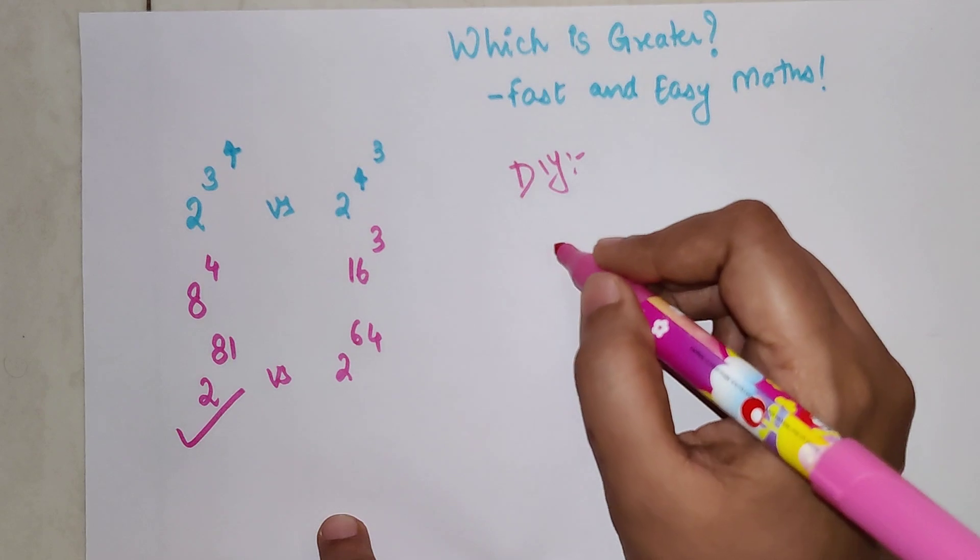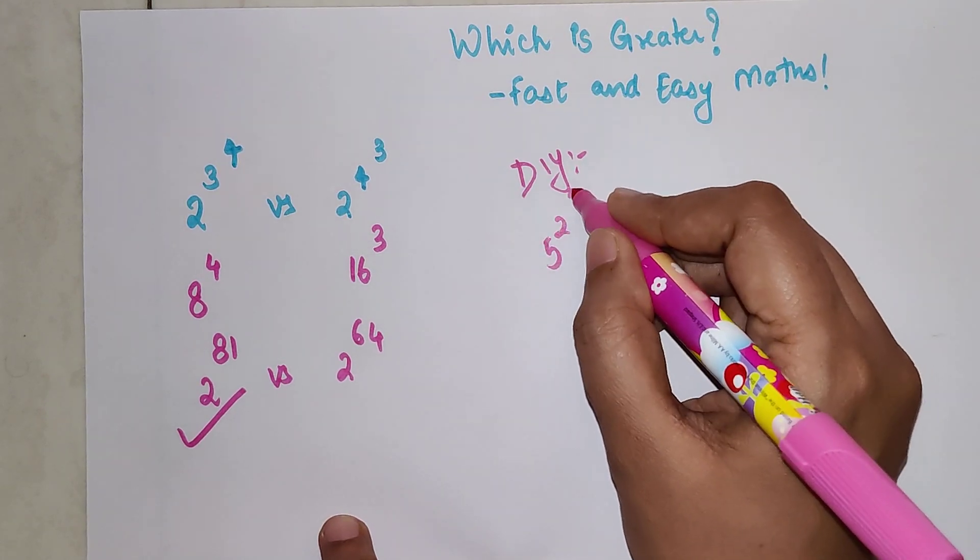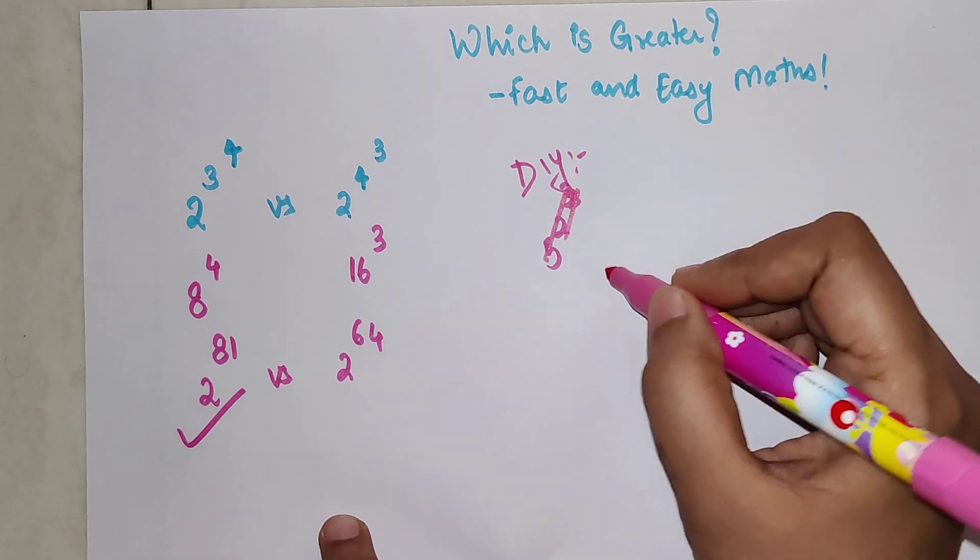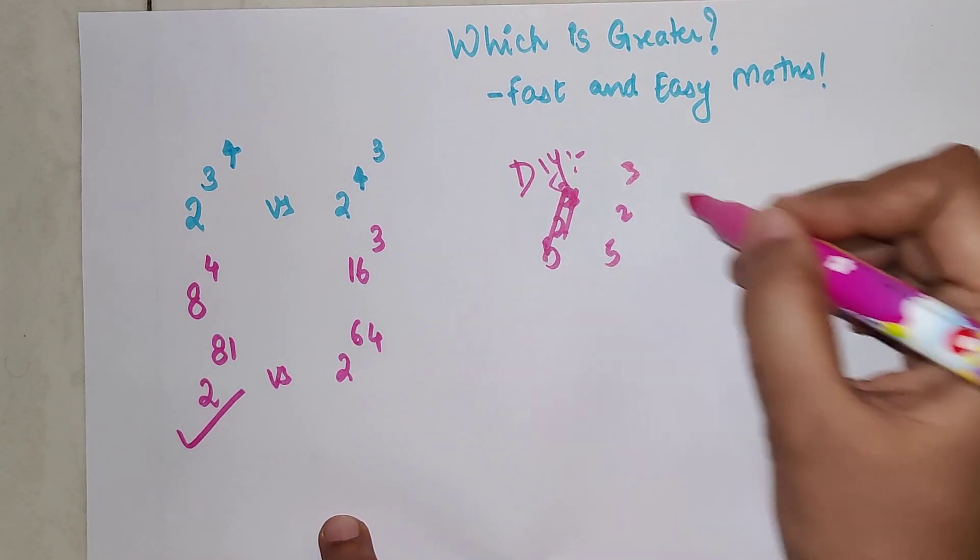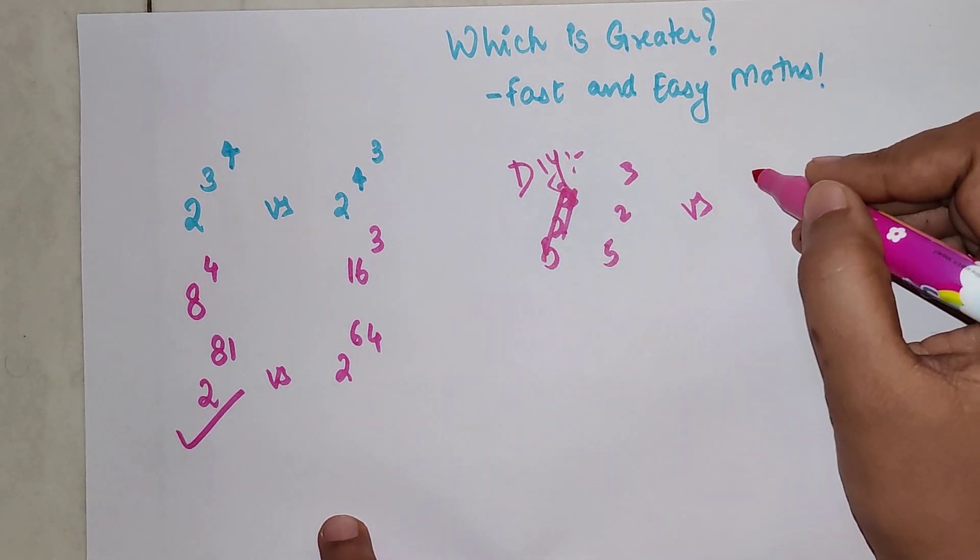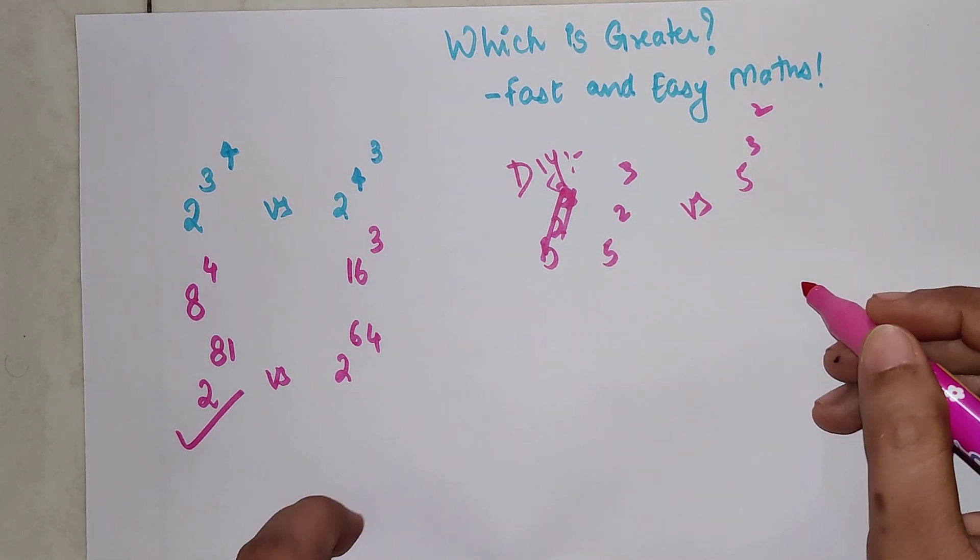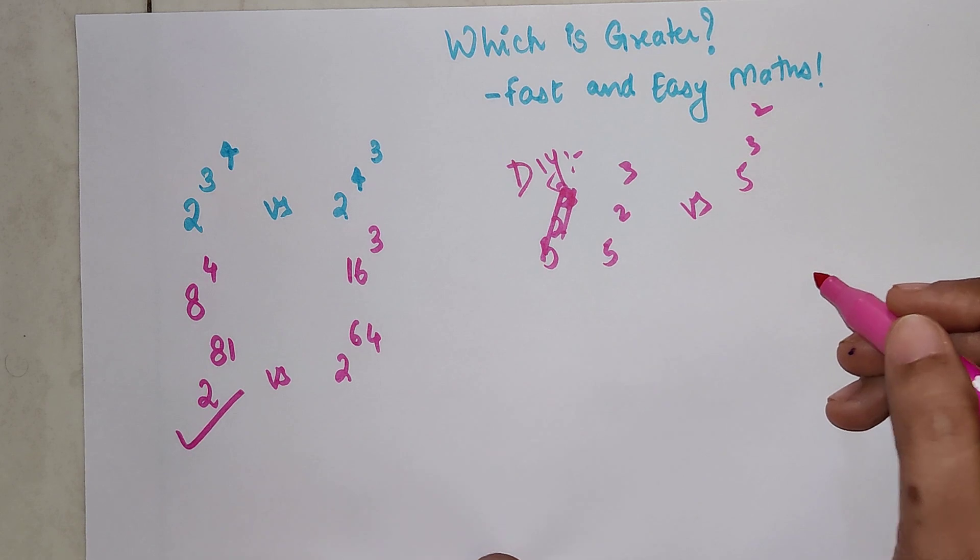And now students, as always, this is a DIY. Do let me know amongst these two: 5 raised to 2 raised to 3 versus 5 raised to 3 raised to 2. Which one is the greater one? Let me know in the comment section. That's it for today, I'll see you in the next video.